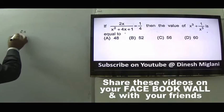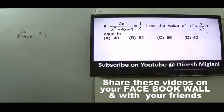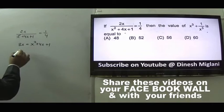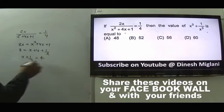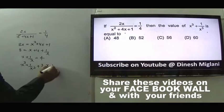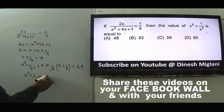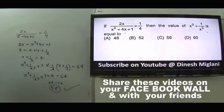Question 22: Given 2x/(x² + 4x + 1) = 1/4. Cross-multiplying: 8x = x² + 4x + 1. Dividing by x: 8 = x + 4 + 1/x, so x + 1/x = 4. Cubing: x³ + 1/x³ + 3(x + 1/x) = 64, so x³ + 1/x³ = 64 - 12 = 52. Answer is B.